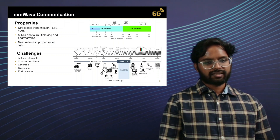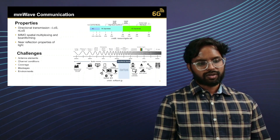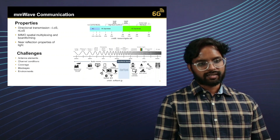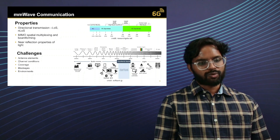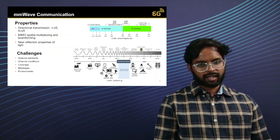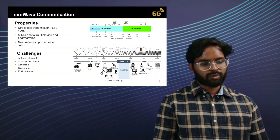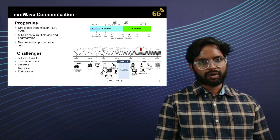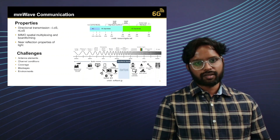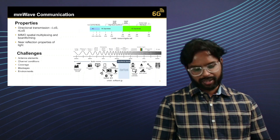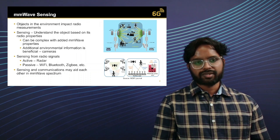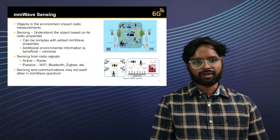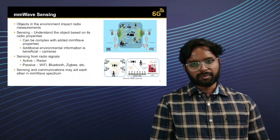This brings a couple of challenges. As antenna size becomes smaller, more antenna elements can be equipped on one RF receiver, resulting in a significant increase of antenna elements such as MIMO or massive MIMO. Channel conditions in the millimeter wave spectrum are much more adverse compared to previous technologies, which is a significant challenge. Coverage, blockages, and environmental factors — whether outdoor or indoor, macro or micro environment — all factor into the reliability of millimeter wave communications during deployment. From the sensing point of view, since millimeter waves are directional, objects in the environment — whether static or dynamic — always impact radio measurements.